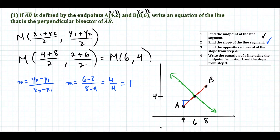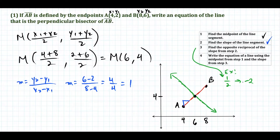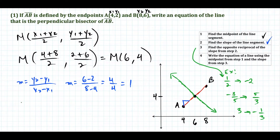Now we take the opposite reciprocal of the slope from step 2. For example, 1/2 flips to 2/1 and changes sign to -2; negative 3/5 becomes positive 5/3; and a whole number like 3 becomes -1/3. So the perpendicular slope — the negative reciprocal of positive 1 — is negative 1/1, which simplifies to -1.